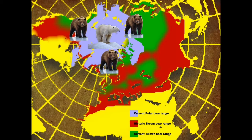Here we see the distribution of the current polar bear range, which is shrinking day by day. The historic brown bear range is indicated in red, and the current brown bear range is indicated in green. As can be seen, the brown bear range has definitely shrunk, and along with it the polar bear range. Polar bears would have had a much wider distribution due to the last ice age that covered most of the northern areas of our planet with an ice cap.